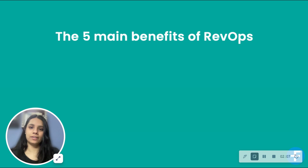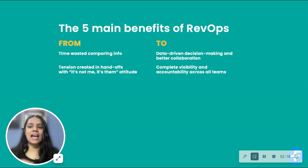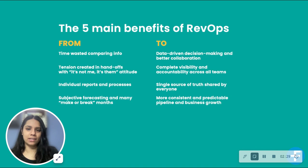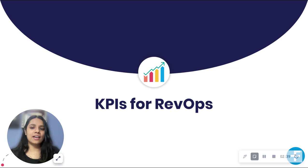Bringing us one step closer to increased revenue growth. To sum it up, RevOps has five main benefits: move from time wasted comparing information to data-driven decision making and better collaboration; from handoff tensions and blame games to complete visibility and accountability; from siloed reports to a single source of truth shared by everyone; from subjective forecasting to a more consistent and predictable pipeline; and from isolated operations to working together to provide a better customer experience, leading to higher win rates and faster sales cycles.